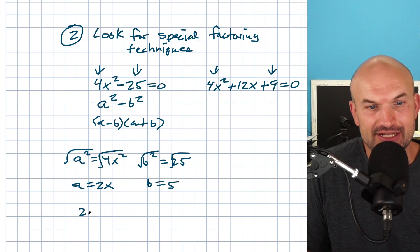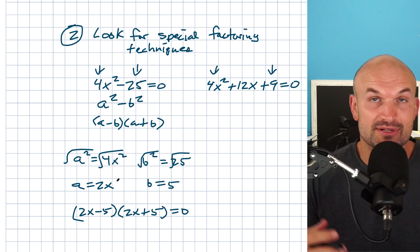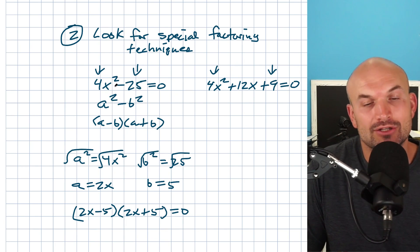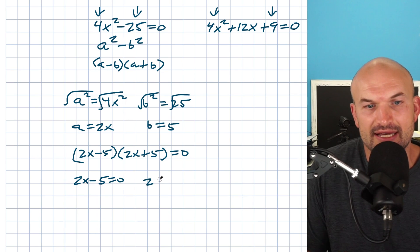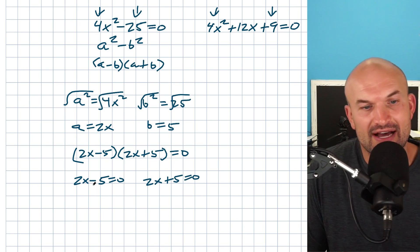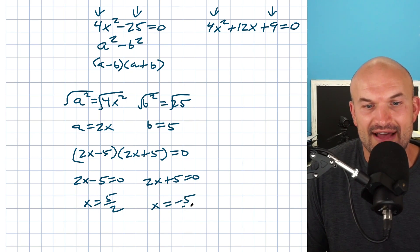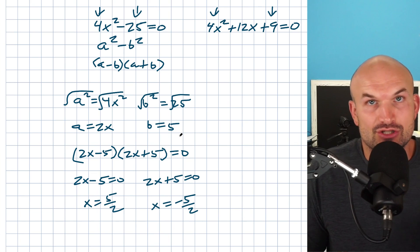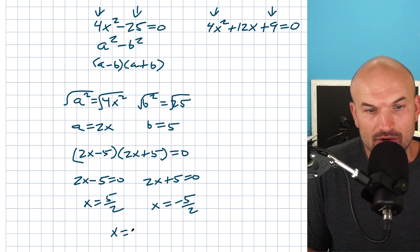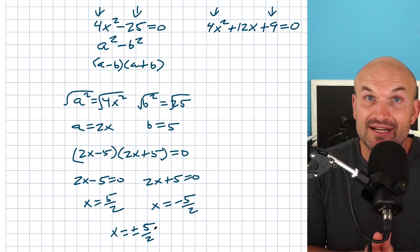Now I can rewrite this as 2x minus 5 times 2x plus 5. You can always check your work by multiplying back out — the middle term adds to zero, which is why there's no middle linear term here. Now with a product equal to zero, apply the zero product property: set both factors equal to zero. Adding 5 and dividing by 2 gives x equals five halves; subtracting 5 and dividing by 2 gives x equals negative five halves. This shows why we don't forget the plus or minus — both solutions exist.